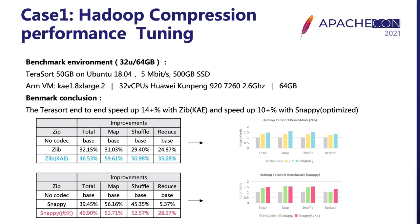Based on the performance tuning in codec libraries, we also conducted Hadoop workload performance tuning using these codec libraries. The testing environment had 32 CPUs, 64 GB of memory, and 500 GB SSDs with OpenEuler OS. We used the TeraSort tool for performance benchmarks with 50 GB of data generated by TeraGen. According to the benchmark results, TeraSort end-to-end achieved more than 40% speedup with Zlib KAE enabled, and more than 10% speedup with the SNAP optimization enabled.